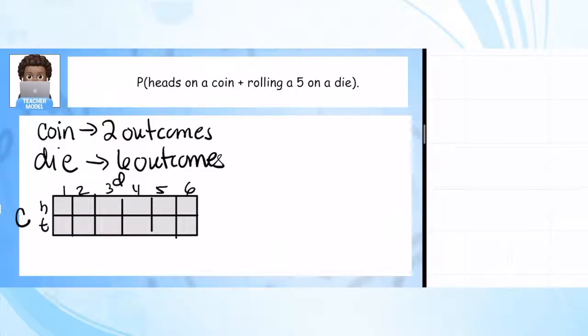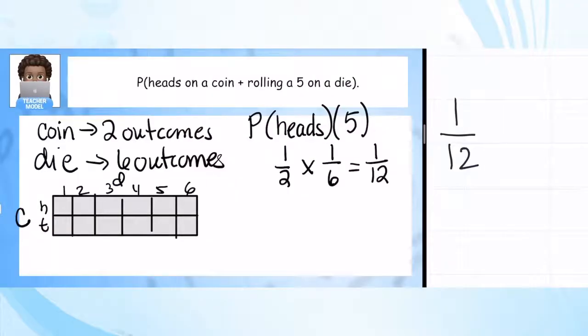So we're going to look for the probability of each outcome and multiply. Here we go - I want the probability of getting heads on the coin, and I'm going to multiply that by the probability of getting a 5 on a die. Getting heads on the coin is 1/2, and getting 5 on a die is 1 out of 6. So the probability of both of those things happening is 1/12.